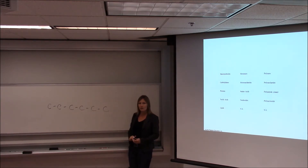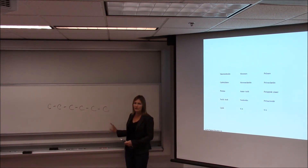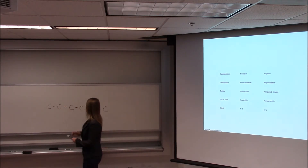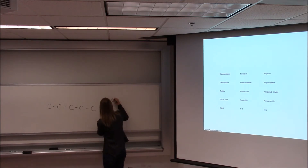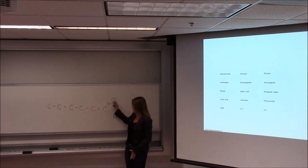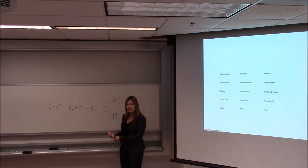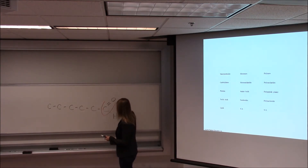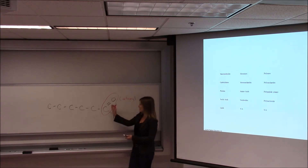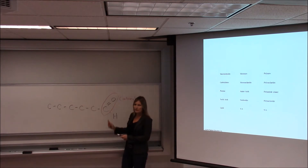Remember, first time around you just memorized the functional groups. Now we're going to put those into context to help understand and visually recognize the macromolecules. Here's our carbon chain — six carbons. Here's our first clue that we're looking at a carbohydrate: this functional group, the carbon double bonded to the oxygen, is called a carbonyl group. Carbonyl groups are found in carbohydrates. Remember, the carbonyl group can occur in the middle of the sugar or at the end of the sugar.